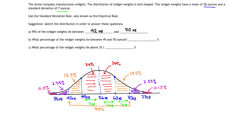Question B: what percentage of the widget weights lie between 49 and 70 ounces? We just add up the relevant percentages. Between 49 and 70 there are three bands: 34%, plus another 34%, plus 13.5%. Adding those three percentages together — 34 plus 34 plus 13.5 — gives us 81.5%. So 81.5% of the widget weights lie between 49 and 70 ounces.